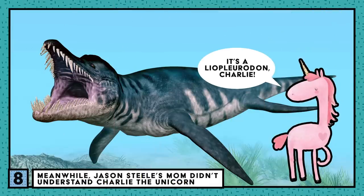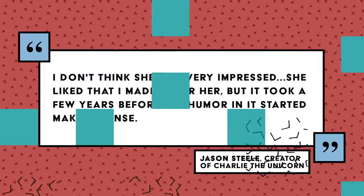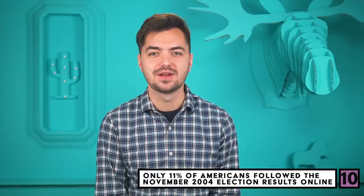Speaking of moms and viral videos, Charlie the Unicorn was originally a birthday gift for the creator's mom. His name was Jason Steele, and in an AMA on Reddit he wrote, "I don't think she was very impressed. She liked that I made it for her, but it took a few years before the humor started making sense." Wikipedia launched in early 2001, and that year they reached 20,000 articles written by users. And for our last numbers of the day, just 11% of Americans used the internet to follow the returns of the November 2004 election.